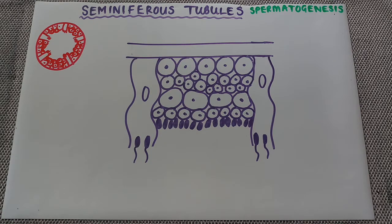In the process of spermatogenesis, this involves mitosis, cell growth, two divisions of meiosis, and then differentiation at the end, which is the same as in oogenesis.